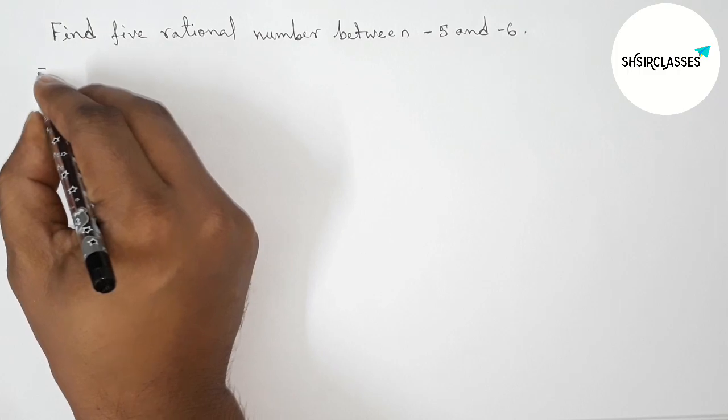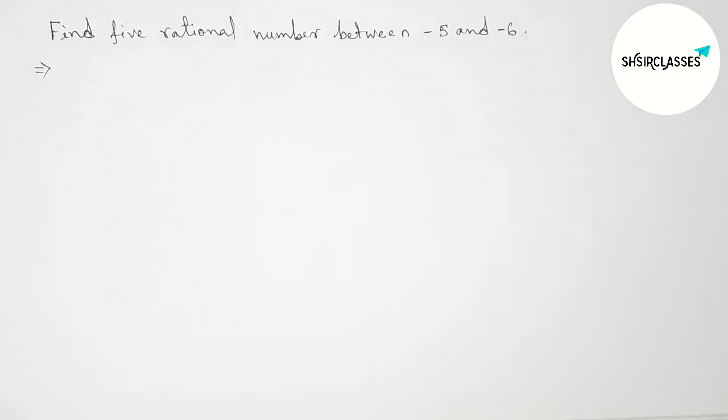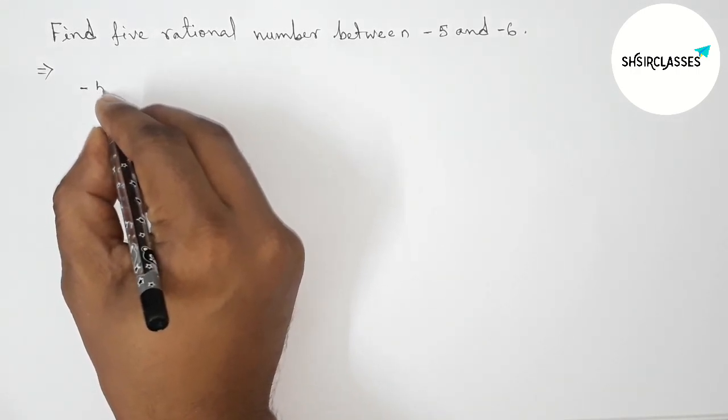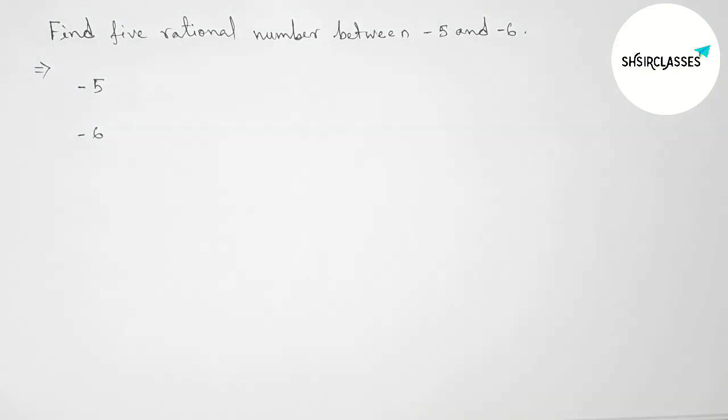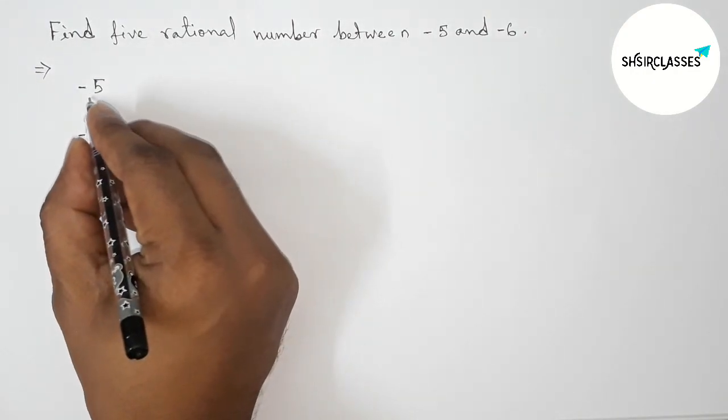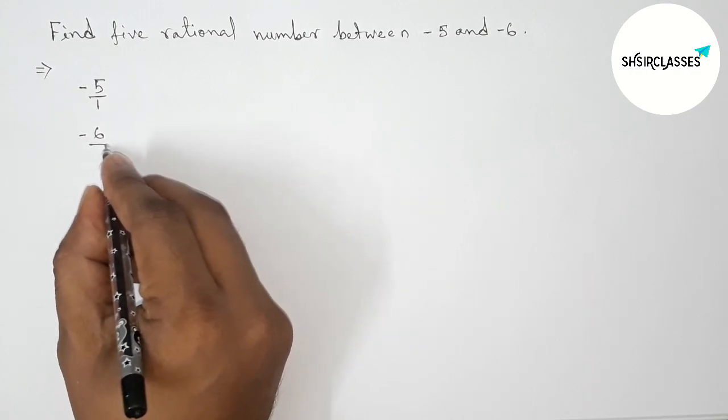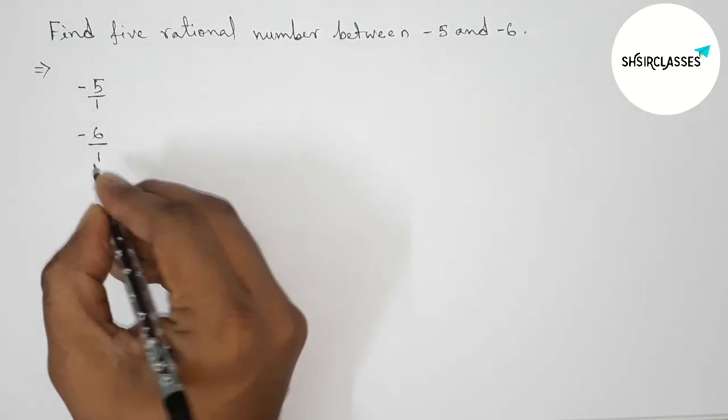First of all, let us solve this problem. Here we have two negative numbers: minus 5 and minus 6. We can write minus 5 as minus 5 by 1 and minus 6 as minus 6 by 1.